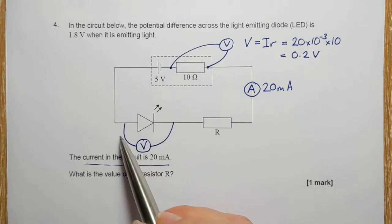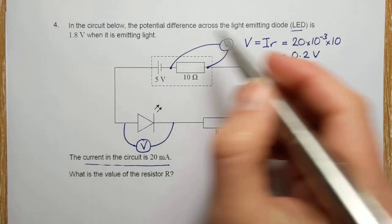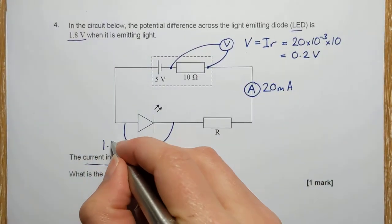We've been told what the PD across the LED is. It's 1.8 volts.